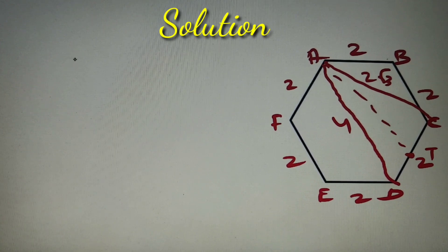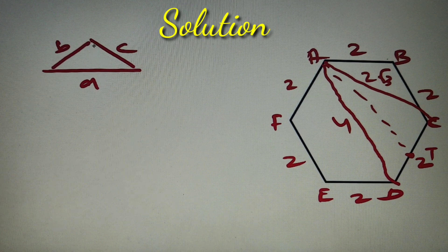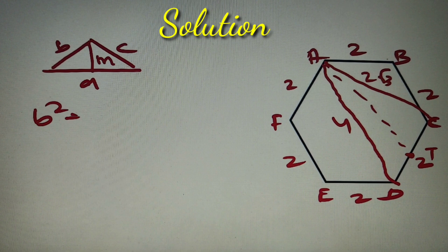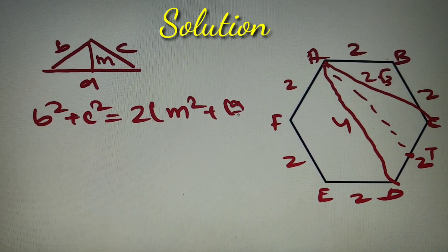So if you don't know what is Apollonius theorem, it basically says that if you have a triangle with length of the sides b, c, and a, and if you have to find the length of the median m, then its value is b square plus c square is equal to twice of m square plus a by 2 whole square.